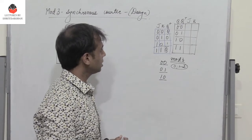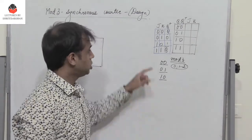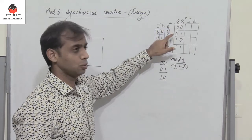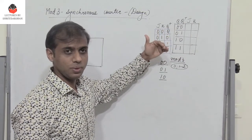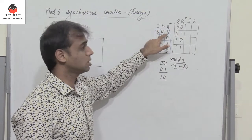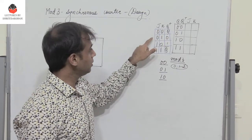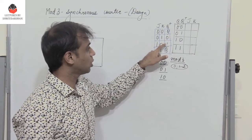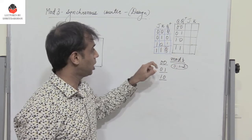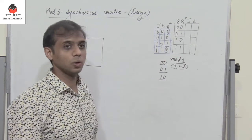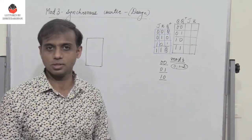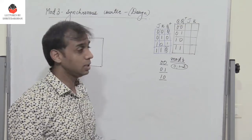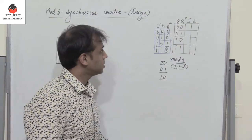We know that if the inputs J and K are 0, then the next state Q+ is equal to Q — the next state equals the present state, meaning there is no change in the output. If J and K is 0 1, the output is 0. If the input to JK is 1 0, the output is set, which is 1. And if the inputs are 1 1, the output toggles.